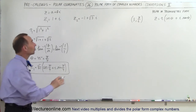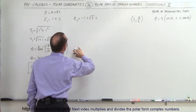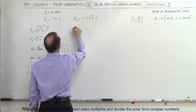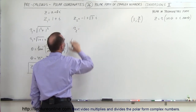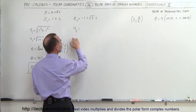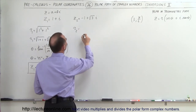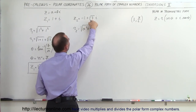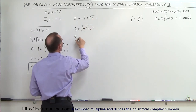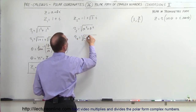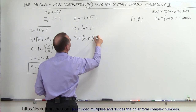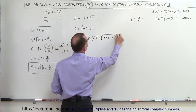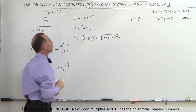Now let's do the same with the second complex number, which is a bit more complicated. We have z2 equals negative 1 plus the square root of 3 times i. The polar distance r2 equals the square root of a squared plus b squared. So r2 equals the square root of negative 1 squared plus the square root of 3 squared, which is the square root of 1 plus 3, equal to the square root of 4, which equals 2.